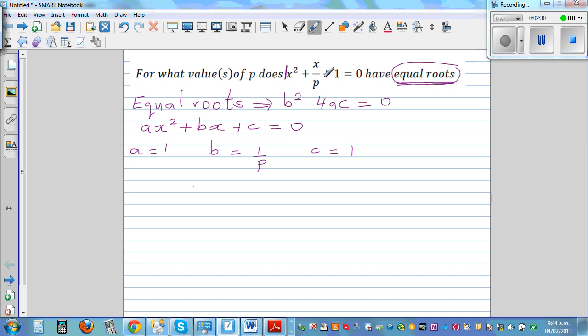Because this can be written as, for those who don't understand how b is 1 over p, this can be written as x squared plus 1 over p x plus 1 equal to 0. That's why b is equal to 1 over p.